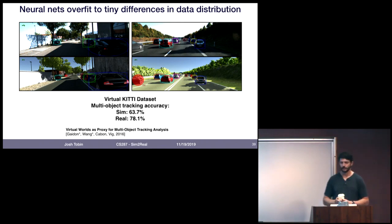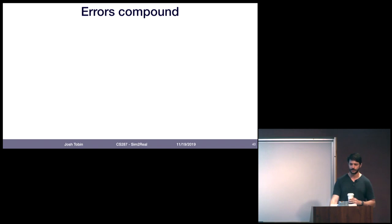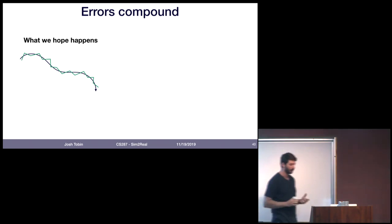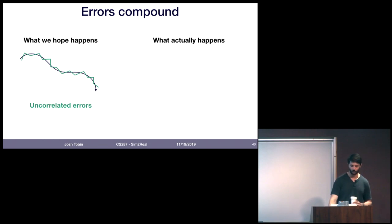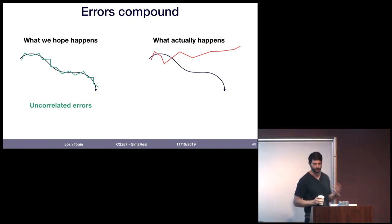Even if you have some errors, shouldn't a robot be robust to modeling errors? The challenge is that errors tend to compound. What we hope happens is that the robot makes small uncorrelated mistakes and stays on track. But what actually happens is the robot gets off the path, gets so far off that it's out of the training data distribution, and is not able to recover.